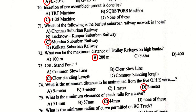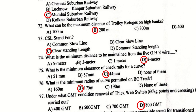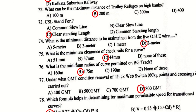The busiest railway network in India is Mumbai Suburban Railways. The maximum distance of a trolley refuge in a high bank can be 200 meters. CSL stands for Clear Standing Length. The minimum distance to be maintained from a live OHE wire is 2 meters.